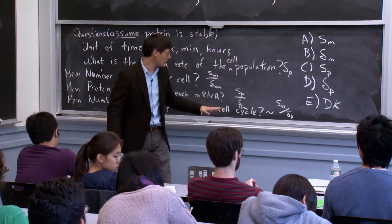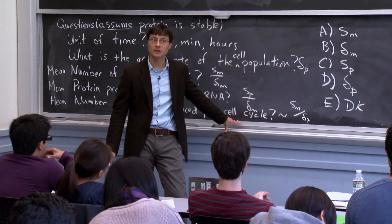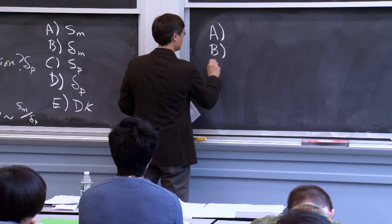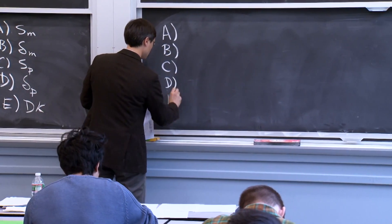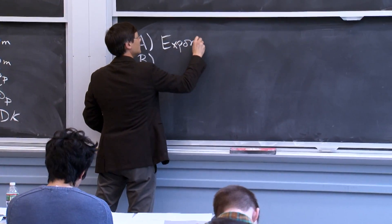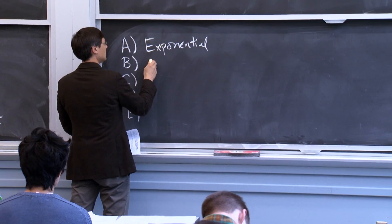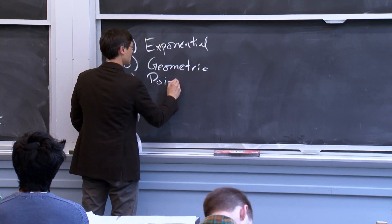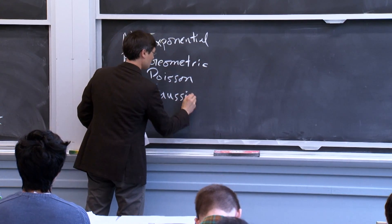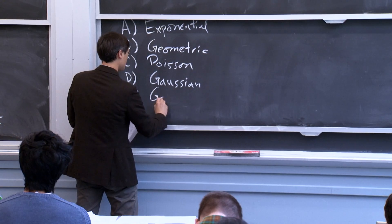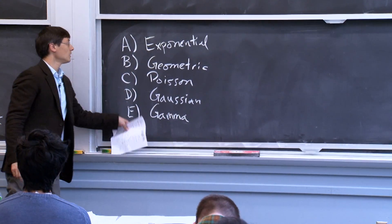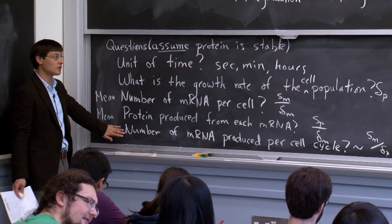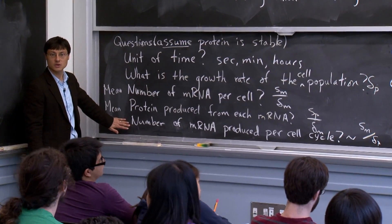From the paper, we know how this thing is distributed. We're going to use a bunch of distributions: exponential, geometric, Poisson, Gaussian, and gamma. The question is, how is the number of mRNA produced per cell cycle distributed? This ends up being Poisson — if there's some probability per unit time that something's going to happen and you want to know how many of them happen in some finite time period, that's basically the definition of a Poisson.